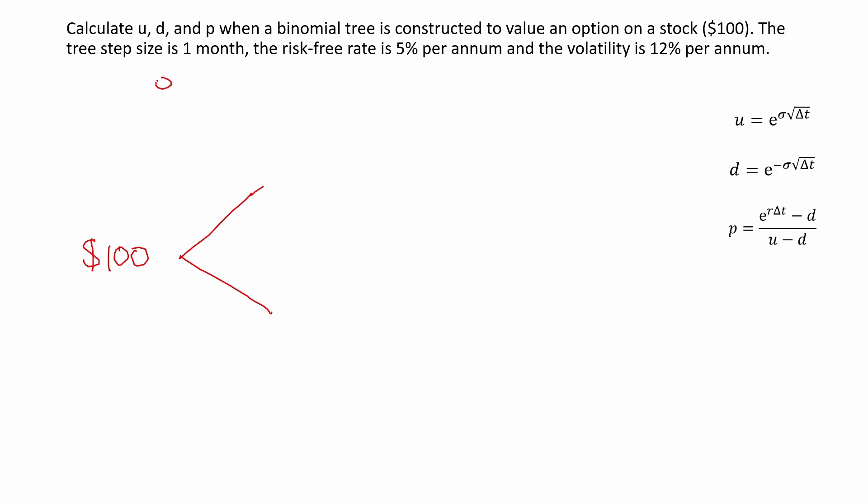We know that the volatility, which is given by sigma, is 12%. The risk-free rate is 5%. And the tree step size is one month. The tree step size is denoted by delta t. Because the time period of reference is always one year, this would be 1/12, because there's 12 months in a year. Therefore, a tree step size of one month is 1/12.